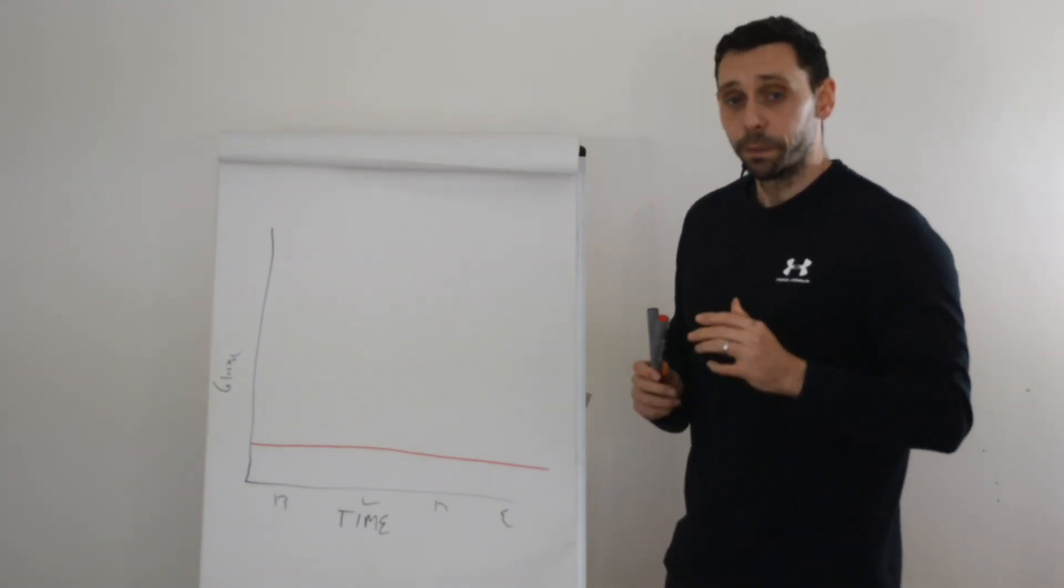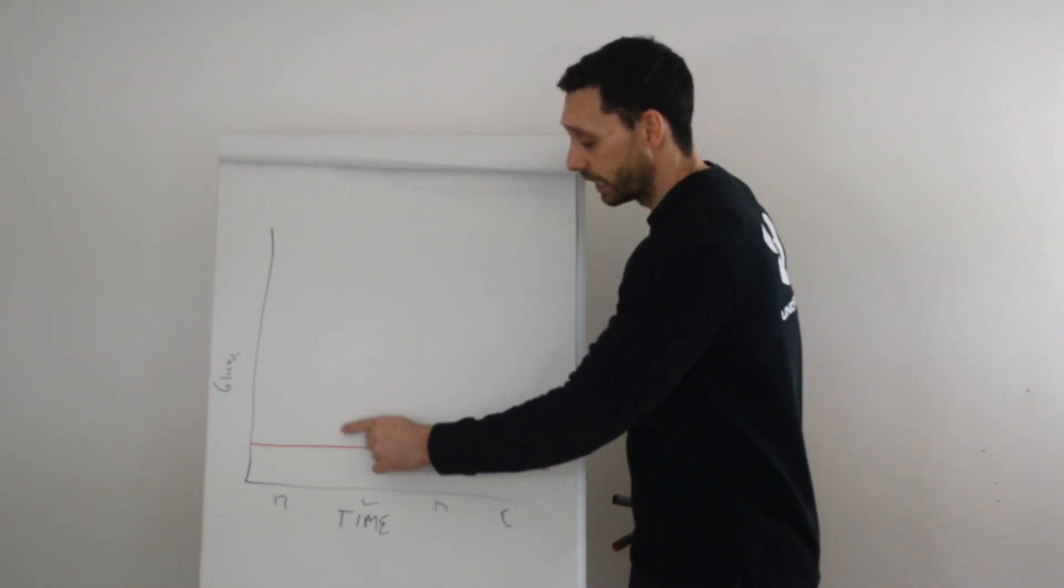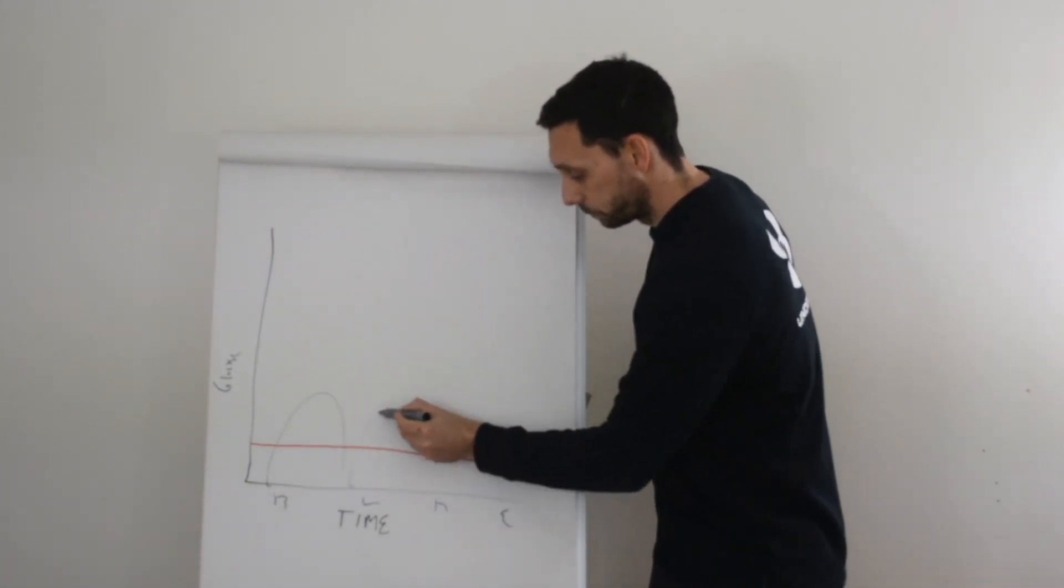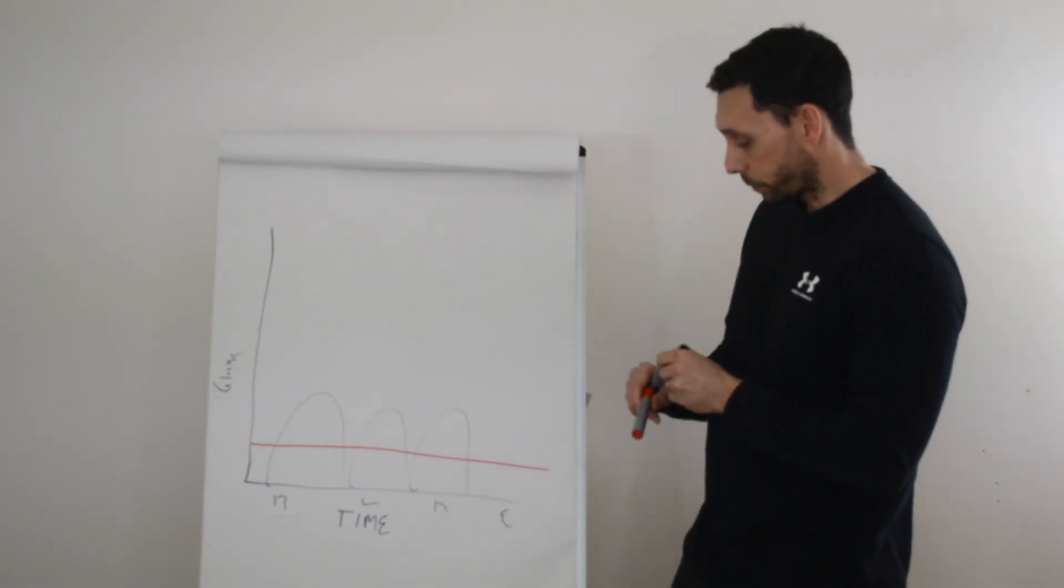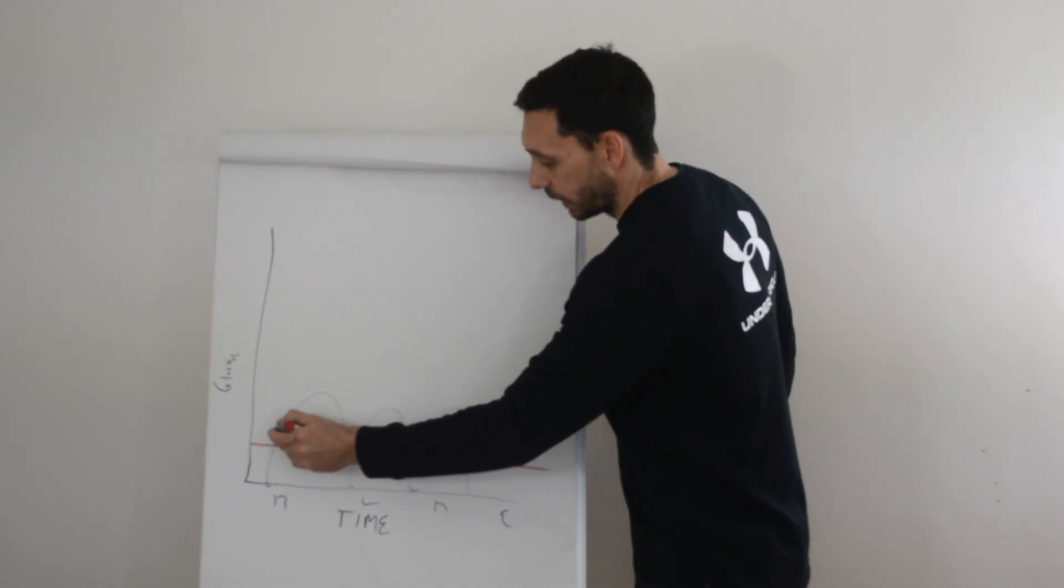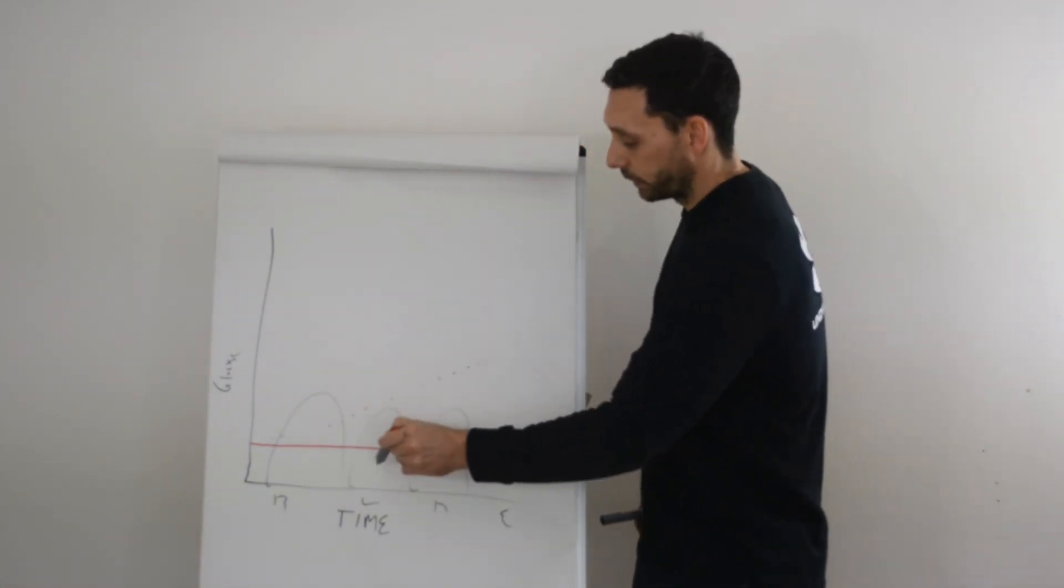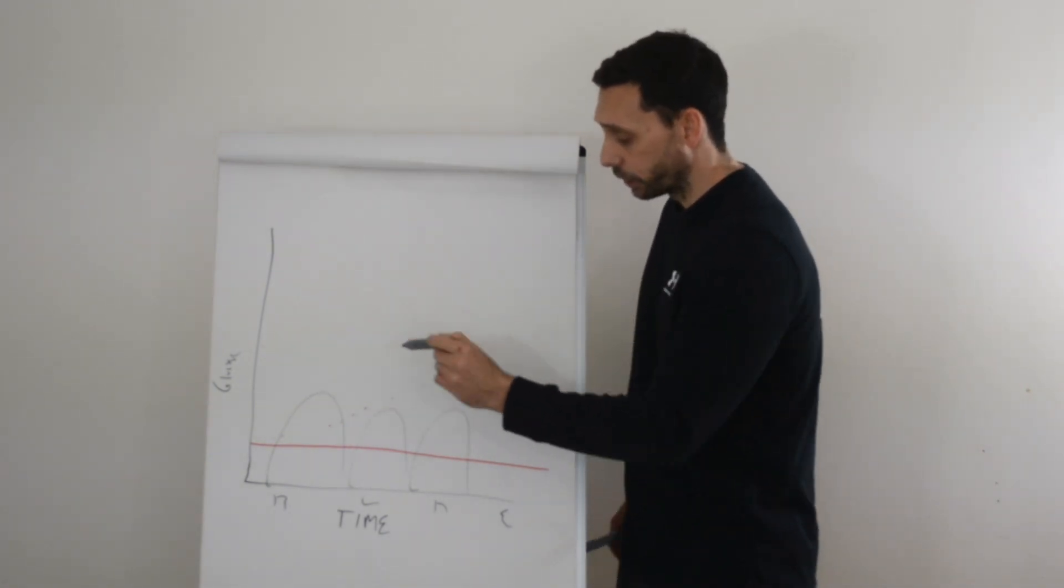Now, what's quite common with people that are on a basal bolus insulin regimen, in other words, they're taking rapid insulin at their meals, or someone that's just on a once a day insulin, is they find that their glucose levels start to trend up throughout the day as they eat. Now, obviously, if you're on rapid insulin, you can accommodate this by adjusting your doses.